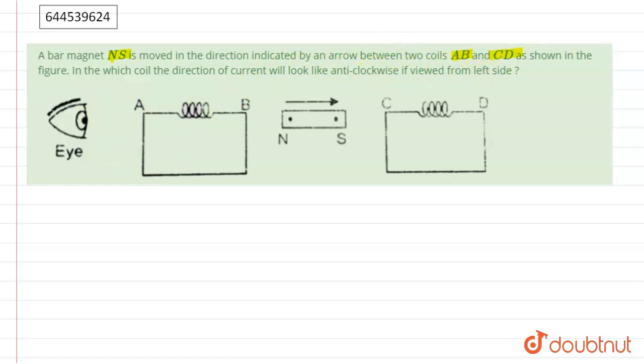According to the diagram, NS is moving from left to right. So in coil AB and CD, due to flux change, there is an induced current.